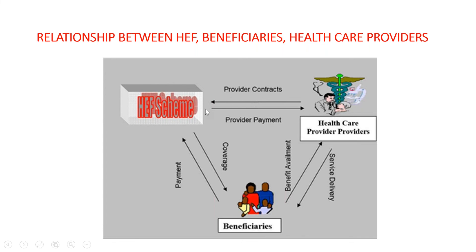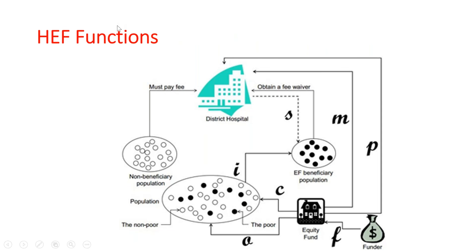Right now the health care fund scheme covers 100% of facilities in Cambodia. If people are non-poor, they pay themselves. If they are poor, the government pays on their behalf through a fee waiver. Donors contribute to the pool fund, as mentioned, with approximately 40% from donors and 60% from the government.